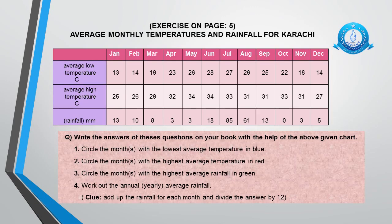Now we are going to do the exercise on page 5 of the book. Please open page 5 and keep your pencils in hand because you have to write answers and circle whatever will be asked. This chart tells you about average monthly temperatures and rainfall for Karachi — names of months are written on top from January to December. The first row shows average low temperature: January 13°C, February 14°C, March 19°C, April 23°C, May 26°C, and it continues like this till December.